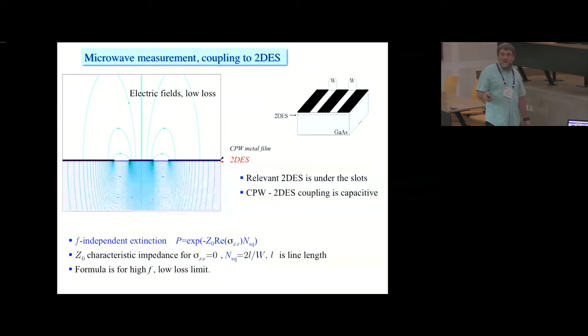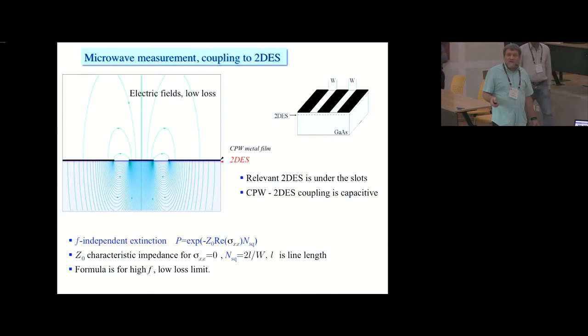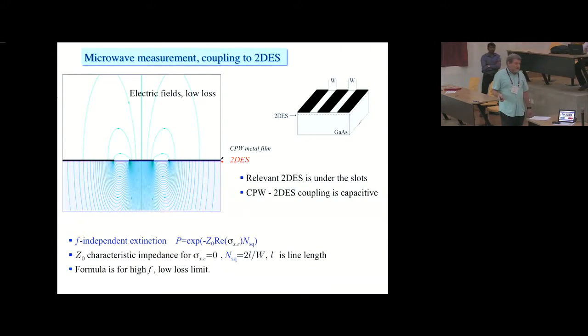I show the electric fields in the low loss, high frequency limit, which actually means I simply calculate them statically, assuming the 2D gas has essentially no effect on it. If you have a situation where you are in high-frequency low-loss, the conductivity comes very simply because you have this frequency-independent extinction formula that works. We have a more sophisticated approach calculating everything distributed that we use to find the limits of this high-frequency low-loss. Again, the coupling is strictly capacitive.